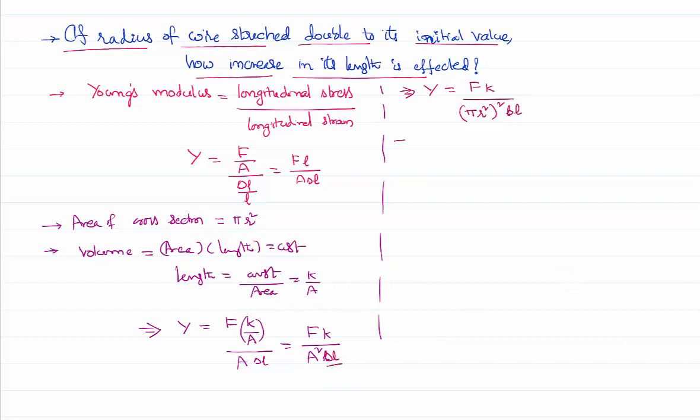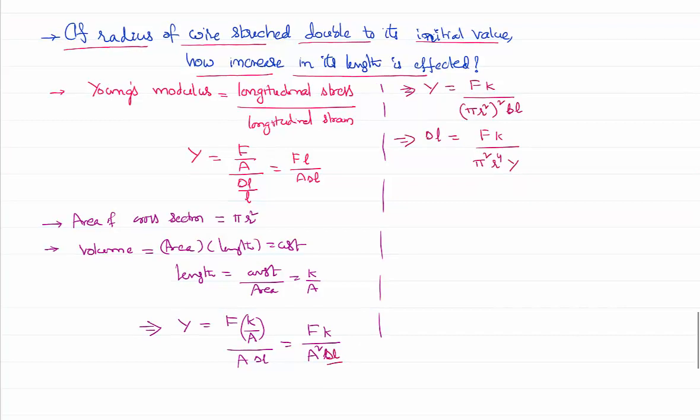What is the increase in length? So I can rewrite my equation for delta L as force times constant by pi squared r to the power 4 and Young's modulus. One thing you need to know: for a given wire, Young's modulus is constant.